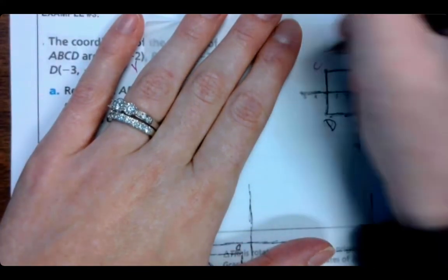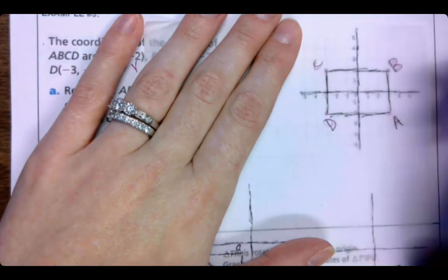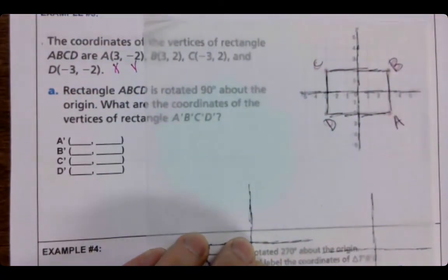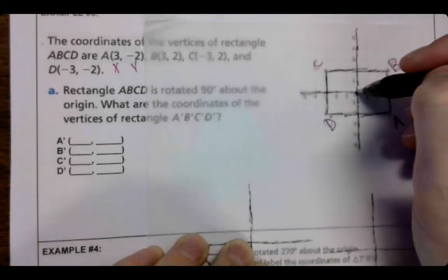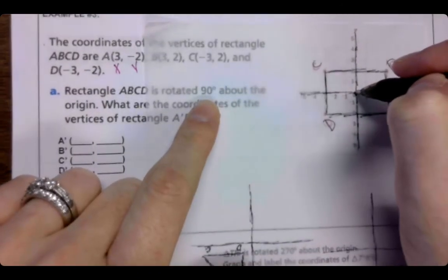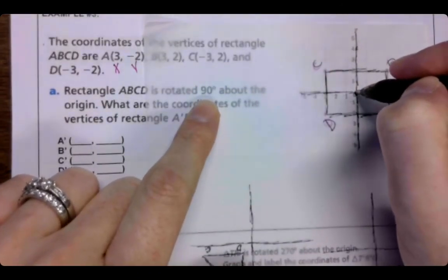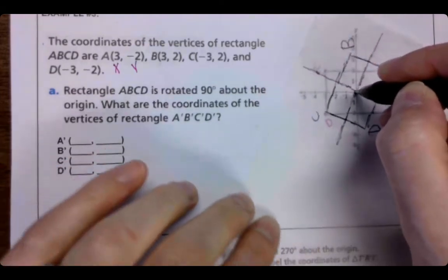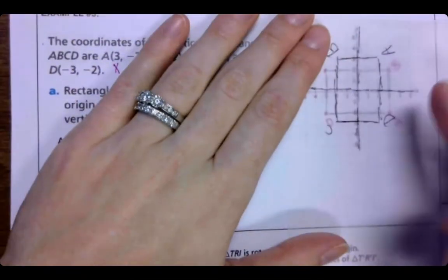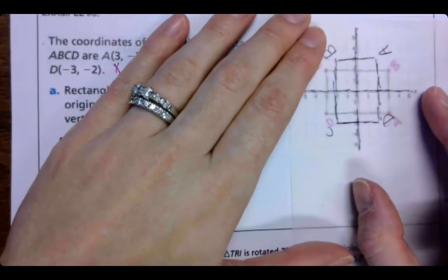And then let's get our rectangle traced. That's A, D, C, and B. Let's see if that's a little color. Oh, I got a blue. All right. So we are going to rotate this 90 degrees positively, which means we are going to go counterclockwise one time. Counterclockwise one time.